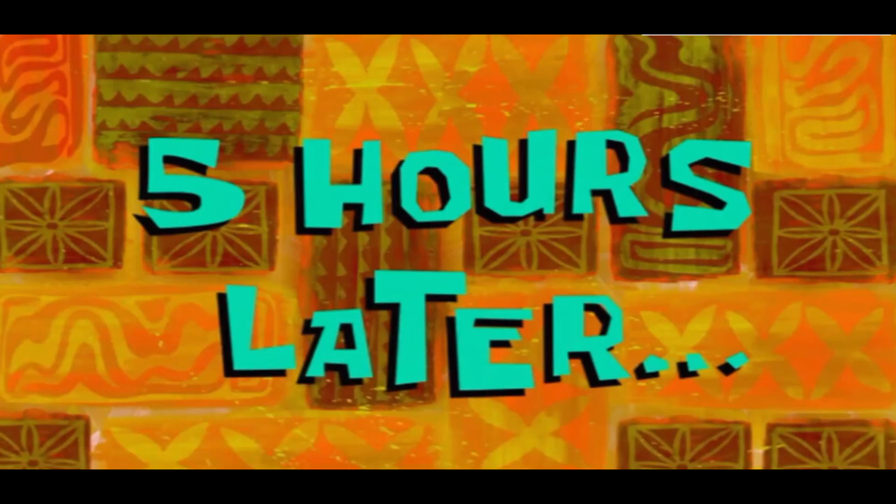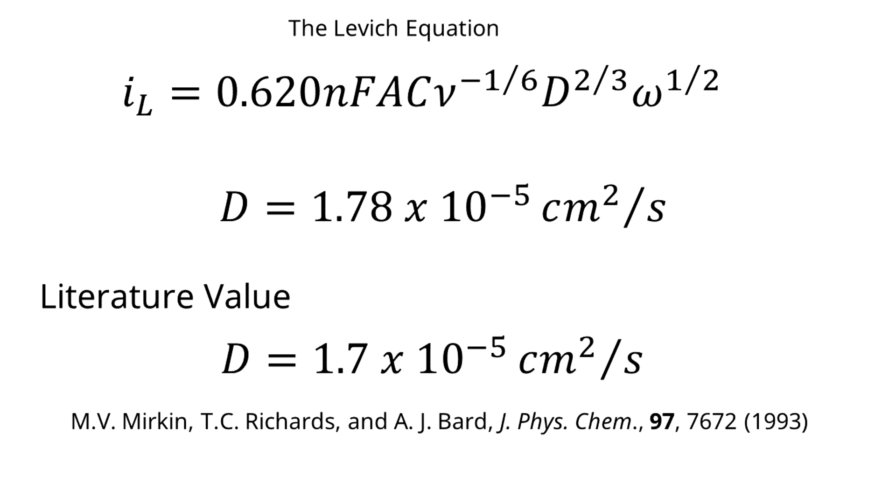After my algebra, I get a diffusion coefficient of 1.78 times 10 to the minus 5 centimeters squared per second. If I compare that to the value published in the scientific literature, I get a really good match. 1.7 times 10 to the minus 5 centimeters squared per second. And there you have it, folks.